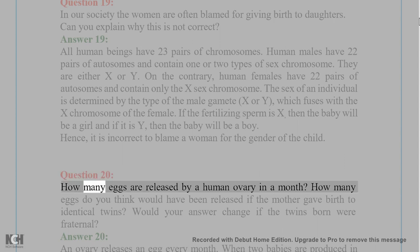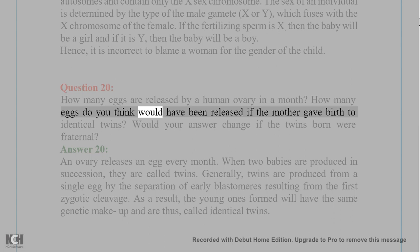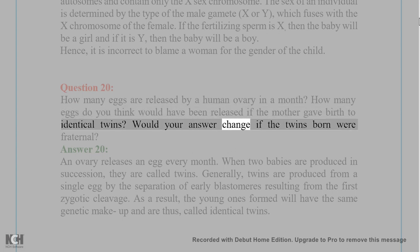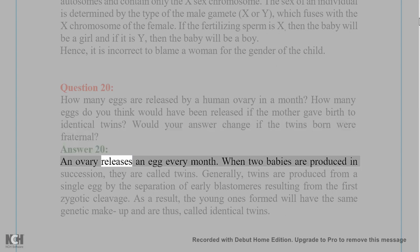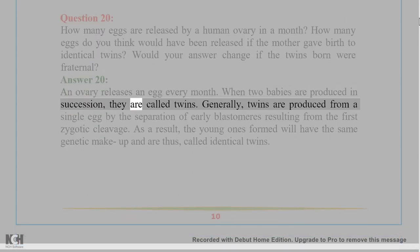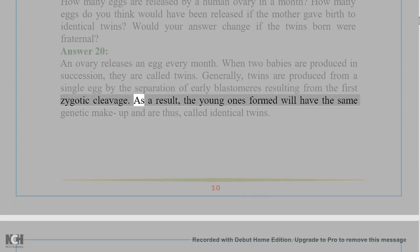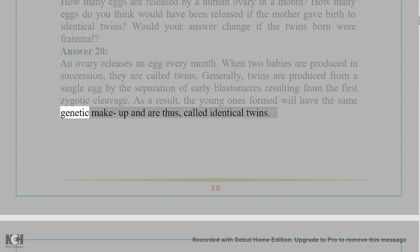Question 20: How many eggs are released by a human ovary in a month? How many eggs would have been released if the mother gave birth to identical twins? Answer 20: An ovary releases one egg every month. Twins are produced when two babies are born together. Identical twins are produced from a single egg by the separation of early blastomeres resulting from the first zygotic cleavage. The young ones formed will have the same genetic makeup and are thus called identical twins.